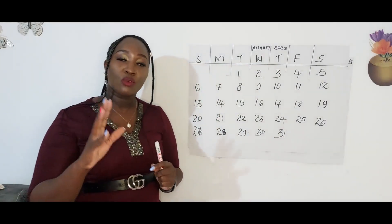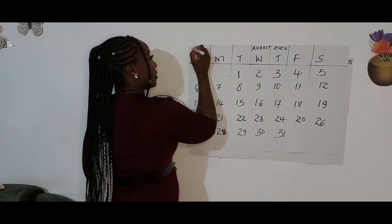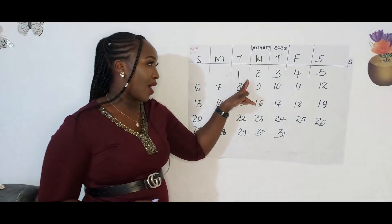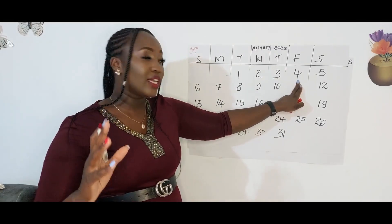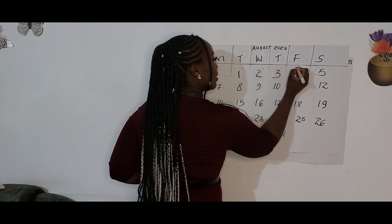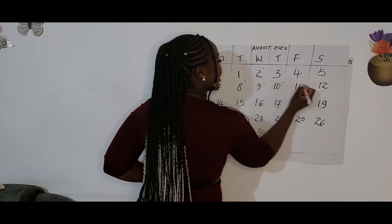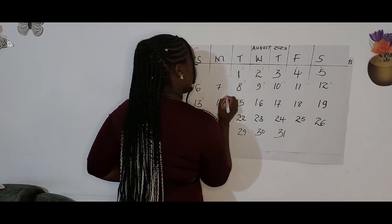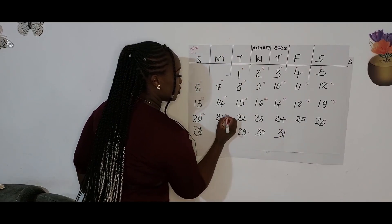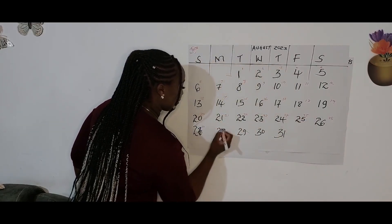When you start counting your menses, you count from the first day. For example, this is Jane. Jane's menstrual cycle started from day one, day two, day three, and day four. When we count Jane's menstrual cycle we start from day one, so this is day one, day two, day three, four, five, six, seven, eight, nine, ten, eleven, twelve, thirteen, fourteen, fifteen, sixteen, seventeen, eighteen, nineteen, twenty.